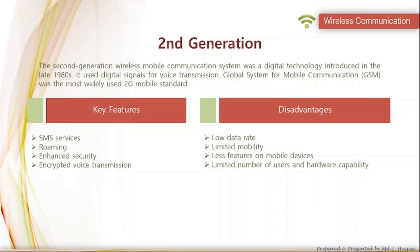The second generation was a digital technology where global system for mobile communication was most widely used. It used digital signals for voice transmission. Key features of 2G were SMS service, roaming, enhanced security, and encrypted voice transmission. Weak points included low data rate, limited mobility, fewer features on mobile devices, limitations of users, and hardware capability.